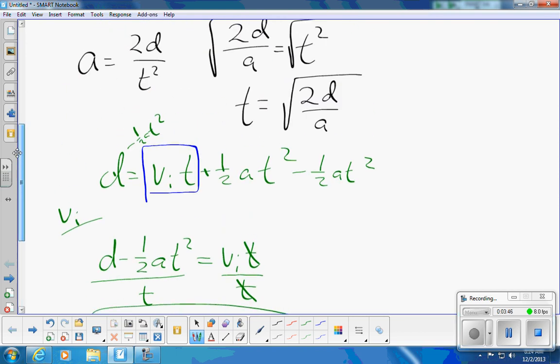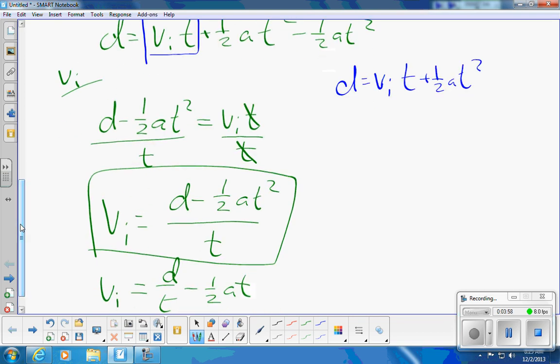All right, the very last thing then, is I'm going to take the same formula. I'll write it again. d equals vi t plus one half a t squared. And I'm going to solve this for a this time, okay?